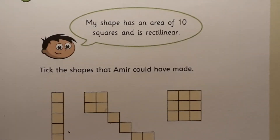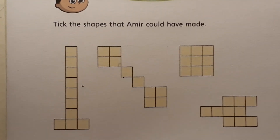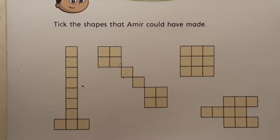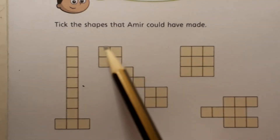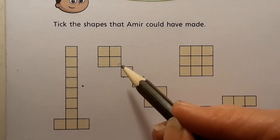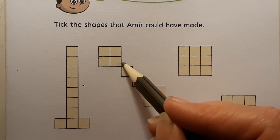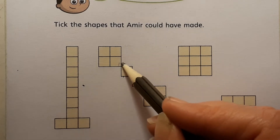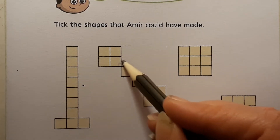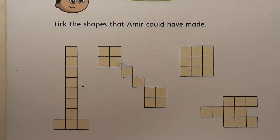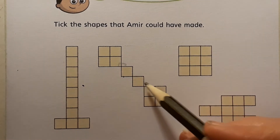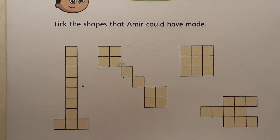We know that each shape must have an area of ten squares, so straight away you can go through and systematically count the number of squares. I'm going to show you the shape that is not rectilinear. It's not rectilinear because if it were made with right angles, this angle would need to be part of the yellow shape — and those parts would all need to be included in the yellow shape.